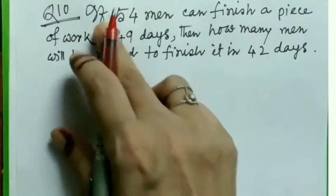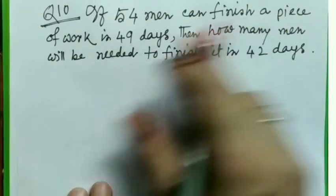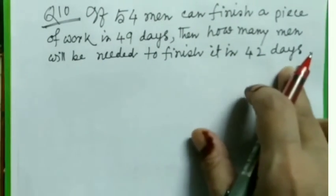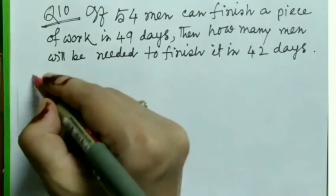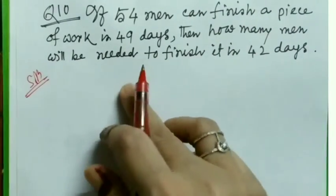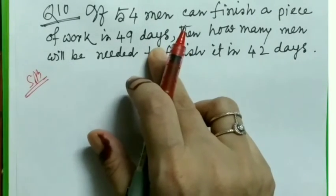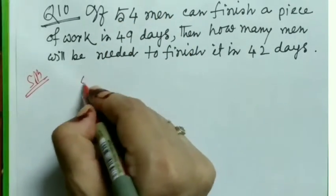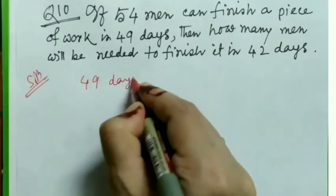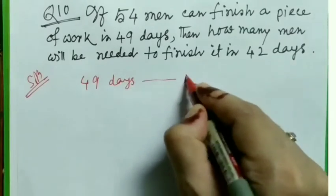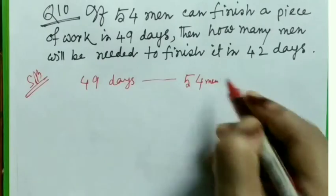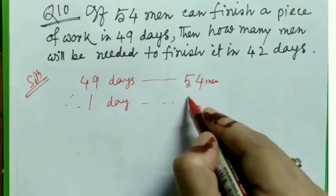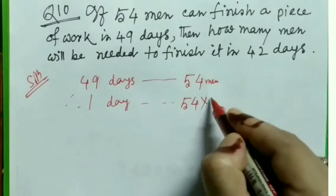Question number 10: if 54 men can finish a piece of work in 49 days, then how many men will be needed to finish it in 42 days? It is given that to finish in 49 days, 54 men are required. So 49 days requires 54 men. Therefore, to finish in one day, the number of persons required is 54 into 49.